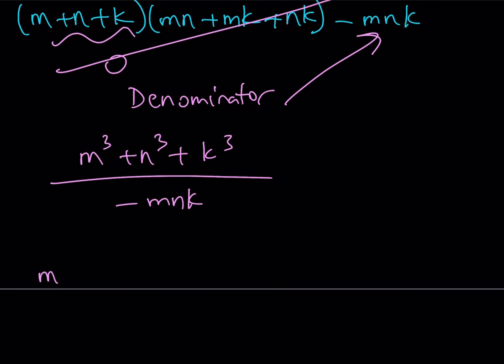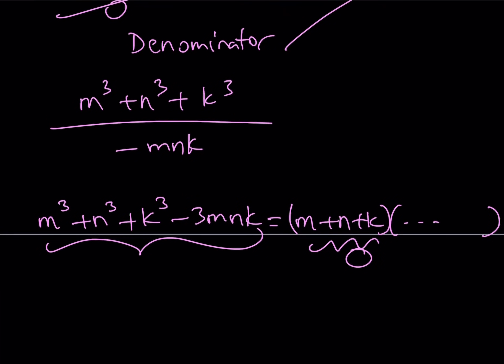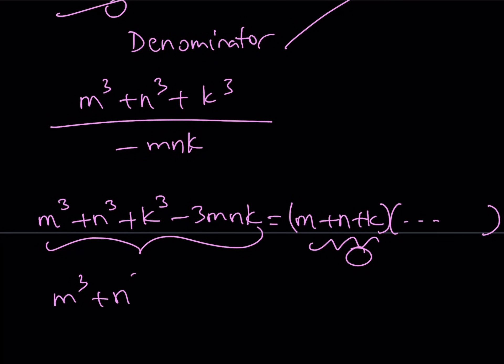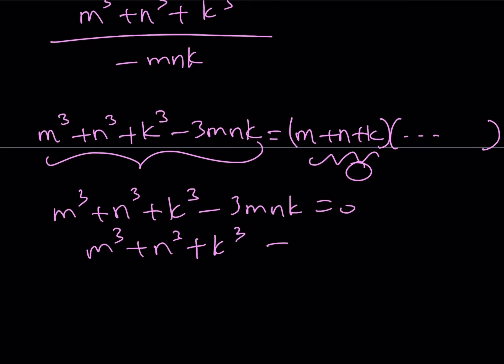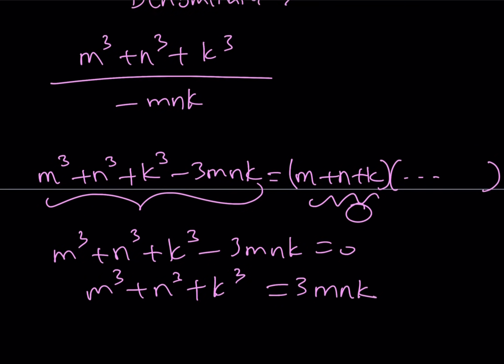I recently did a video on this one. I can also share the link down below. Remember, we had this type of identity, and we know that it's factorable. Especially what we know is that this contains a factor of M plus N plus K. We don't really care about the other factor because what happens is M plus N plus K is zero. Therefore, this quantity will also be zero, which means that M cubed plus N cubed plus K cubed minus 3MNK is equal to zero, which means the sum of the cubes can be written as 3MNK.